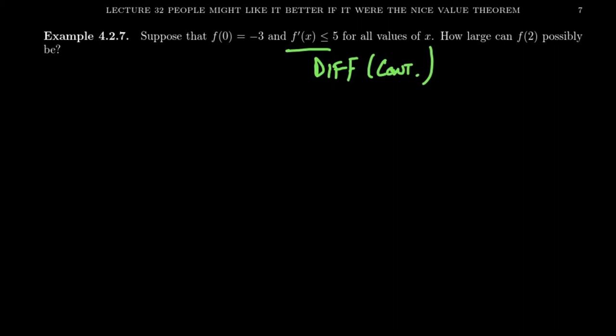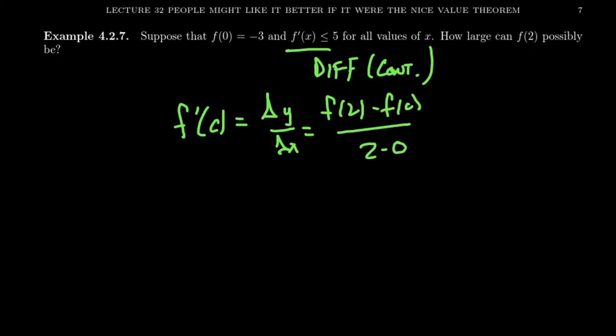Therefore, the mean value theorem guarantees that there's some number c such that f prime of c is equal to the average rate of change. That is, we're going to take f of 2 minus f of 0 over 2 minus 0. f of 2 is the number we're trying to predict, and f of 0 is the last reference we actually know.